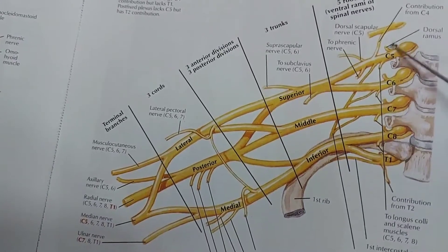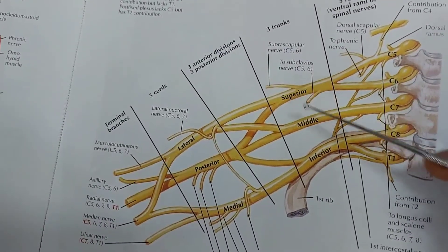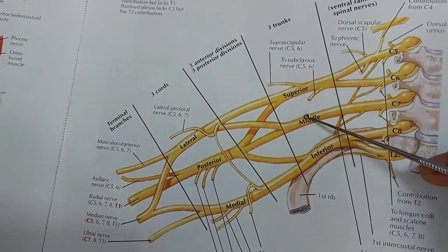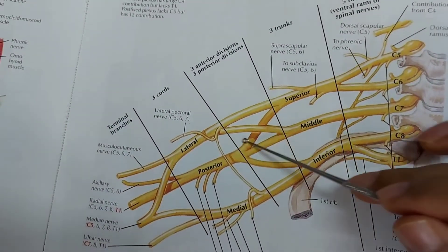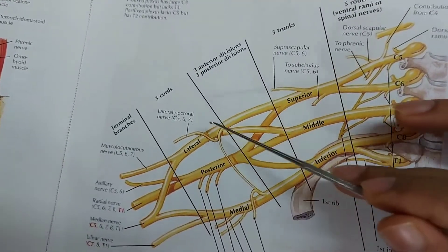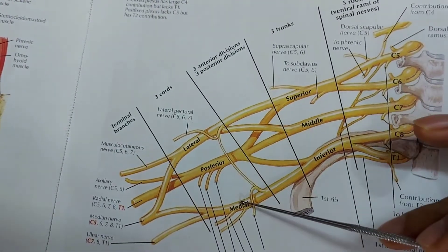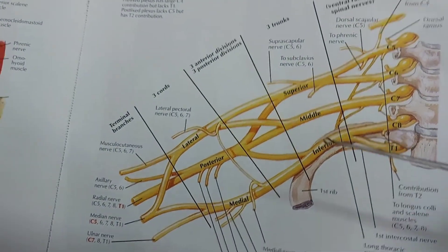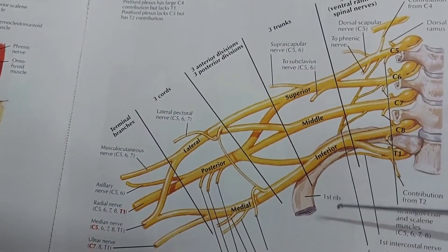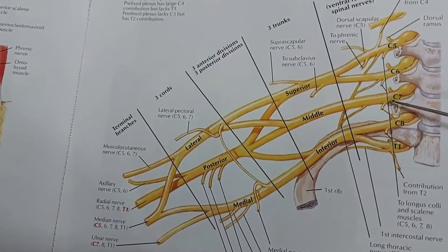The five roots unite to form the trunks: superior, middle, and inferior trunk. These trunks divide into the anterior and posterior divisions, and these divisions form the cords: lateral cord, posterior cord, and medial cord. The root value of the long thoracic nerve is cervical 5, 6, and 7.